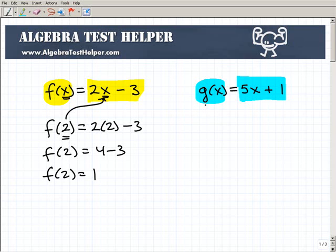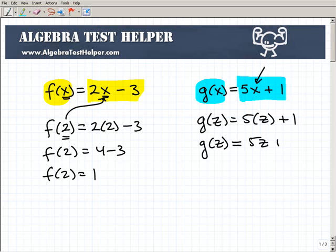Now let's go over here to the g of x function and let's plug in something else for x. Let's plug in maybe z. Let's find g of z. So what would I do there? Well, I would replace this x with a z. So it would be 5z plus 1. So g of z would be equal to 5z plus 1.